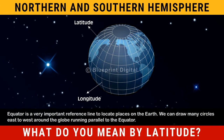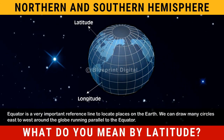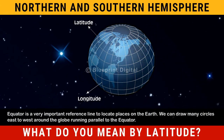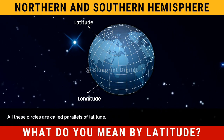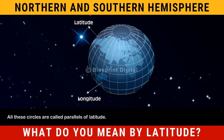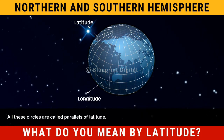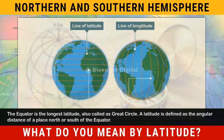We can draw many circles east to west around the globe running parallel to the equator. All these circles are called parallels of latitude. The equator is the longest latitude, also called a great circle. A latitude is defined as the angular distance of a place, north or south, of the equator.